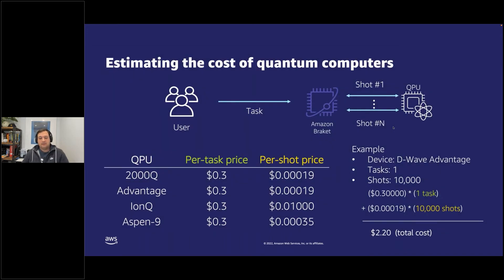To estimate the cost of quantum computers, we have to be familiar with the task and shot model that Amazon Braket uses. Users will submit tasks, and tasks are comprised of many shots. Each quantum computer has a different cost for shots and a per-task price of 30 cents.